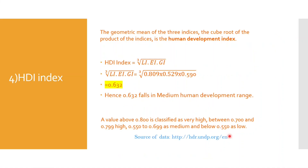Now we can calculate the HDI. The HDI is the geometric mean of the three indices — Life Expectancy Index, Education Index, and Gross National Income Index. We take the cube root of the product of all three indices: cube root of 0.809 multiplied by 0.529 multiplied by 0.590. After calculating this, we get a result of 0.632. This is the HDI of Bangladesh in 2019.